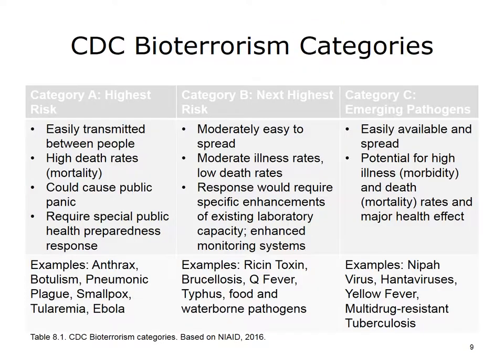Bioterrorism agents are categorized by the CDC according to their ease of transmission and severity. Category A is the highest risk—these agents are easily transmitted and have high mortality; examples include anthrax and botulism. Category B agents are the next highest risk, moderately easy to spread and causing moderate illness rates; an example is ricin toxin. Category C agents are the third highest risk—these emerging pathogens are easily available and have the potential for high illness rates; examples include hantaviruses and multidrug-resistant tuberculosis.